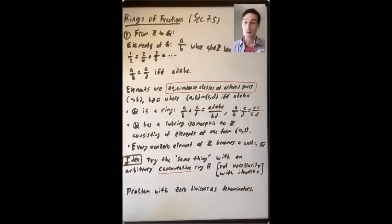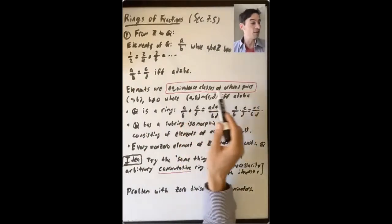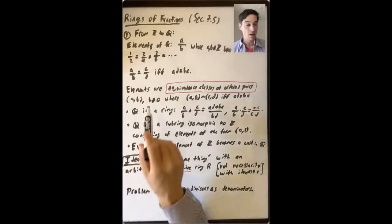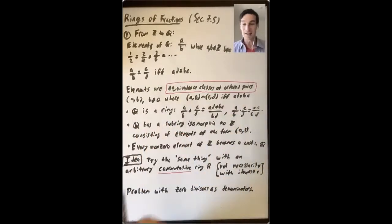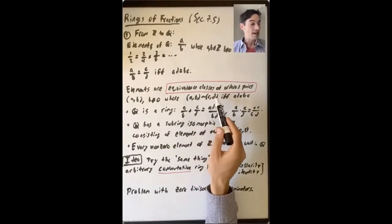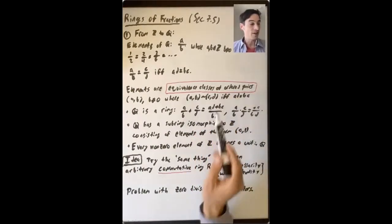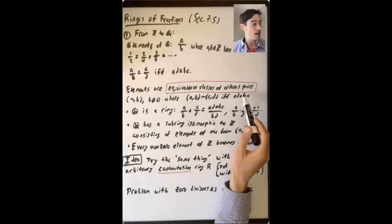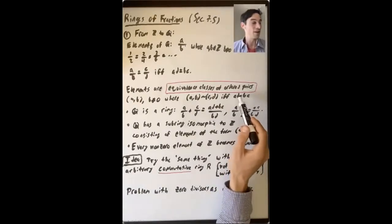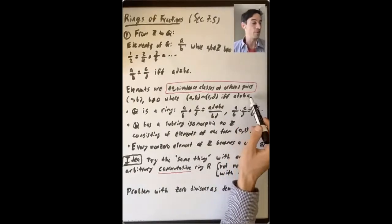So one way to describe elements of Q is as equivalence classes of ordered pairs (a, b), where b is not equal to zero, and where a over b is equivalent to c over d if and only if a·d equals b·c.